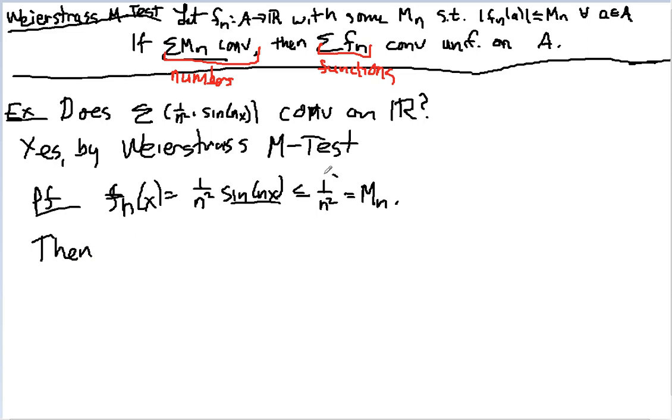Then the Weierstrass M-Test says I just need to add up all these and see if that converges. Then the sum of the M sub n's, which is 1 over n squared, converges by the P-test.